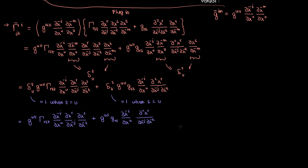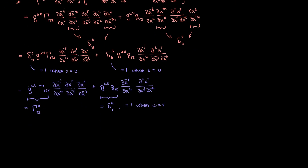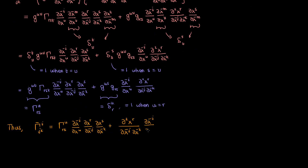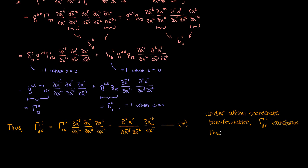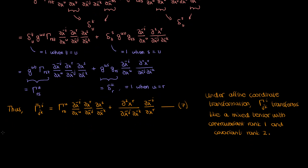The Kronecker delta is 1 when t equals v and 0 otherwise, so I replace all the v's in the first expression by t's. In the second case the Kronecker delta is 1 when s equals v and 0 otherwise, so I replace all the v's by s. After this replacement, the first term looks very similar to the Christoffel symbol of the second kind in unbarred coordinates, so I make that substitution. Recognizing that the product of the inverse metric tensor components and the regular metric tensor components gives another Kronecker delta that is 1 when u equals r and 0 otherwise, the expression simplifies further.